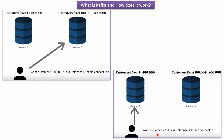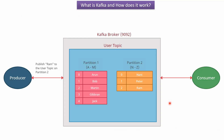And if I want customer number 7, it will be in database A and I have to connect to database A. We use sharding because if a large amount of data is in a single database, queries become slower. To avoid that, we use the sharding concept. The same way, in Apache Kafka we can use partitions — it is the same concept as sharding.